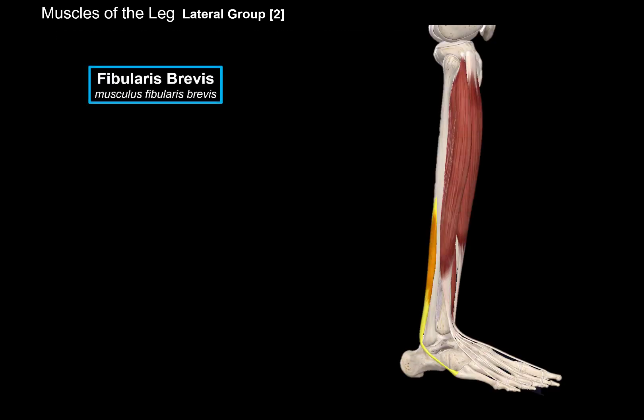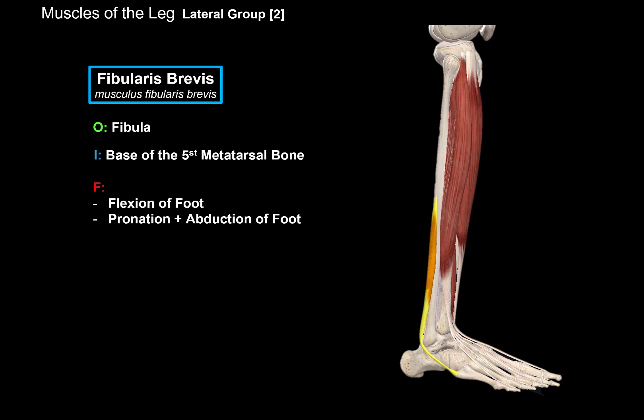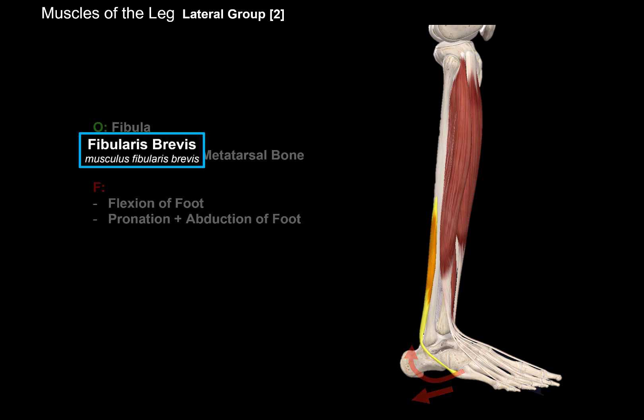The lateral group consists of two fibular muscles that originate on the lateral surface of the fibula. Tendons of both muscles run behind the lateral malleolus under the superior and inferior fibular retinaculum, formed by the fascia of the leg. They are both innervated by the superficial fibular nerve. The first one is the fibularis brevis, which originates from the lateral surface of the fibula and inserts at the base of the fifth metatarsal bone. Its function is flexion of the foot, as well as pronation and adduction of the foot.